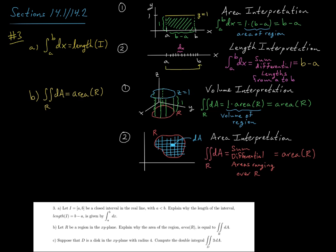Alright, so now for the third part here, this is c. Suppose that d is a disk in the x, y plane with radius 4. Compute the double integral of 3 dA.